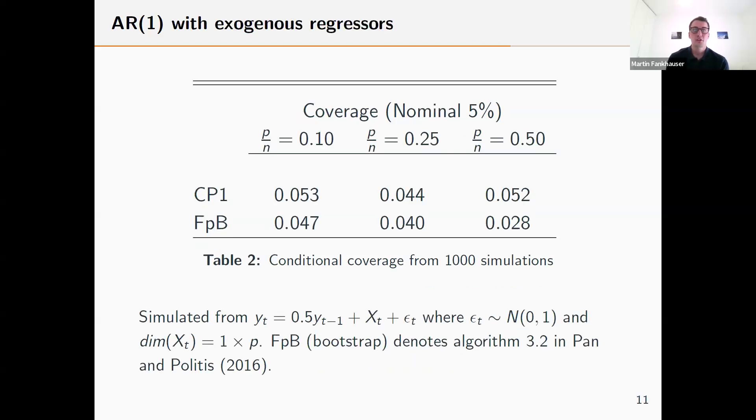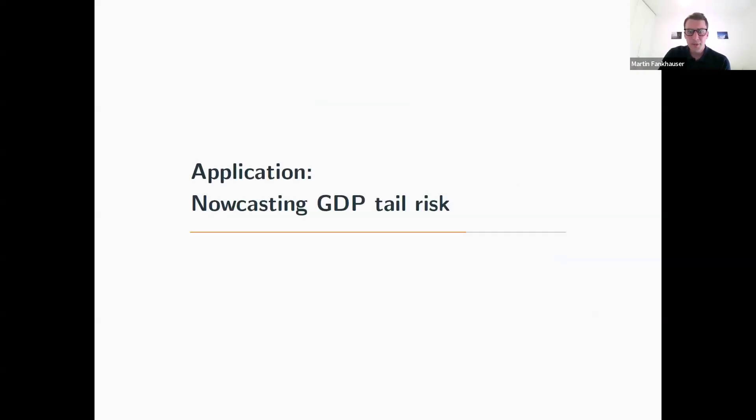If we change this slightly, so we consider our autoregressive model but fix the sample size at 200 and add additional regressors, increasing the dimensionality of the prediction problem, then we see that whereas the conformal predictor CP1 still has empirical coverage close to the nominal level, the forward bootstrap of Politis is breaking down the more regressors we include. This is a feature which also appeared in the first example.